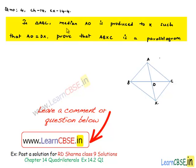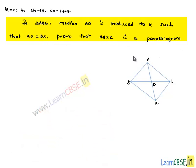In triangle ABC, median AD is produced to X such that AD is equal to DX. Prove that ABXC is a parallelogram.